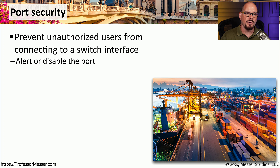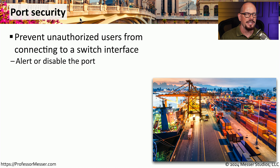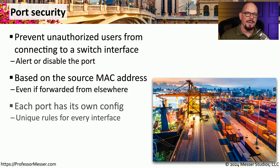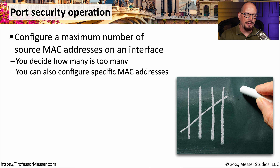One of the challenges with securing a switched network is that you can't physically be watching every single interface on every single switch all the time. But there are features within the switch that can provide additional security — specifically port security. Port security is a feature built into a number of switches that prevents someone from unplugging an existing system and plugging in their own system into that same interface. The switch will recognize that a new system has been plugged in and prevent it from communicating on the network, based on the MAC address — or media access control address — of the device. By configuring your switch to look for those MAC addresses, you can prevent someone from effectively changing the MAC address in the middle of the day. The configuration for port security usually starts by telling the switch how many MAC addresses should be associated with a particular interface — one or multiple.